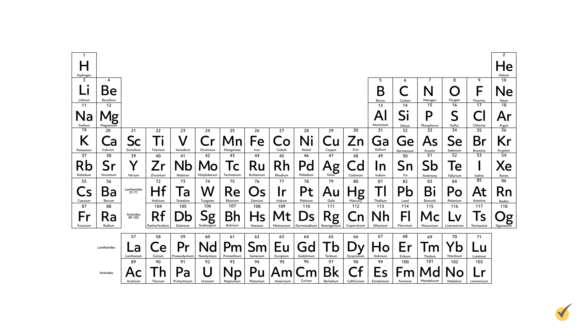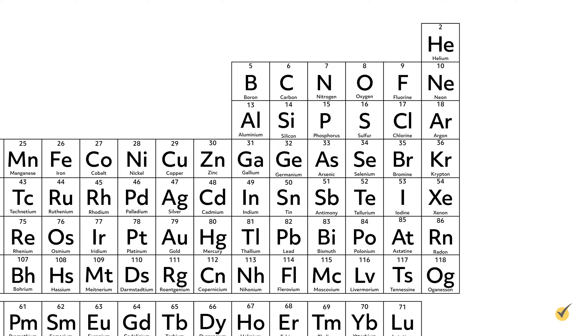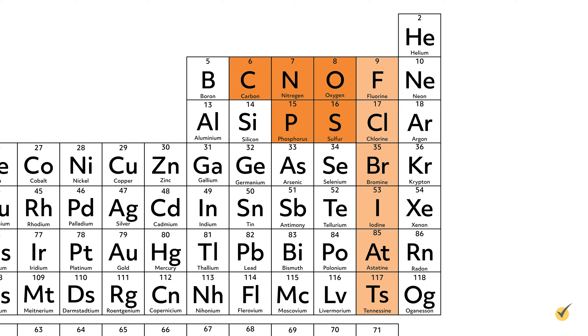Generally, atoms that form covalent bonds are the non-metals in the top right of the periodic table, like carbon, oxygen, nitrogen, sulfur, phosphorus, and the halogens. Hydrogen is also included, even though it's not in the top right. These are the atoms we see in organic chemistry. Even though we're dealing with a small subset of the periodic table, covalent bonds vary drastically in their properties, particularly in their polarity.